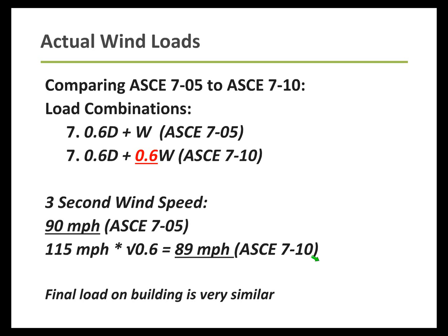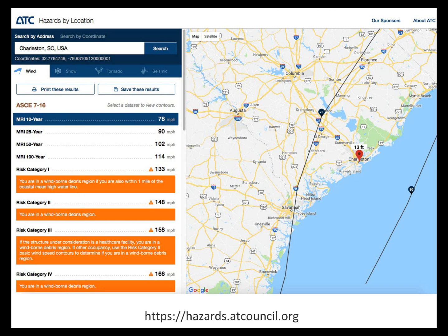Using ASCE 7-05, for calculating ASD level wind forces you just use the net W — the net wind force — because you are already at ASD level forces. Going to 7-10, you're basically taking a 0.6 multiplier to get from LRFD or ultimate wind loads down to an allowable service level. So in the end, if before you were using 90 mile an hour wind speeds and now it looks higher, if you do the conversion factor it's 89 versus 90. Most of the country has very similar results between 7-05 and 7-10, with only a few areas where basic wind speeds actually changed.